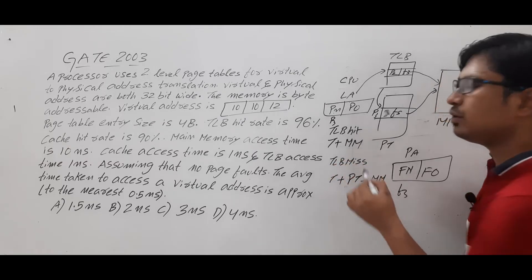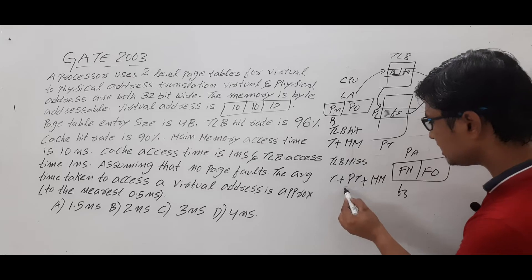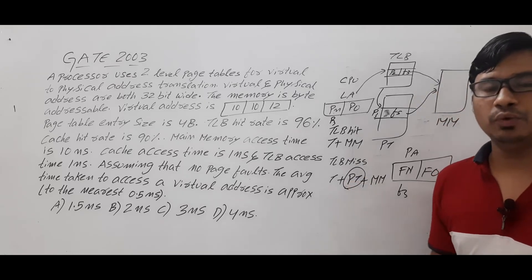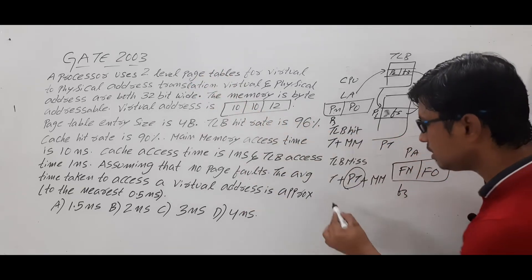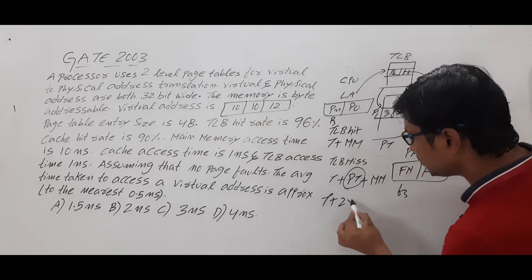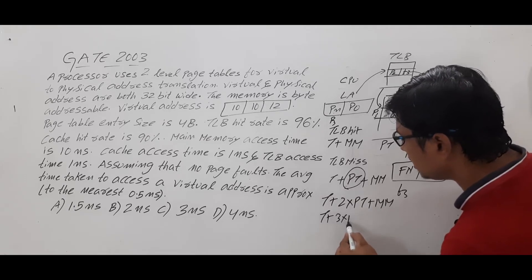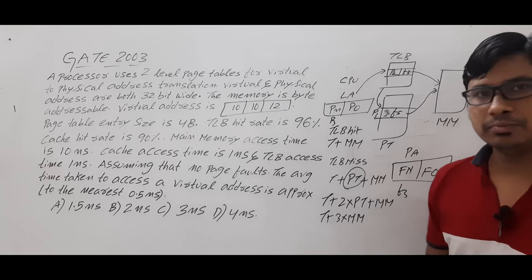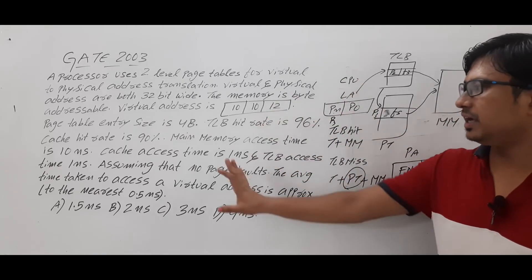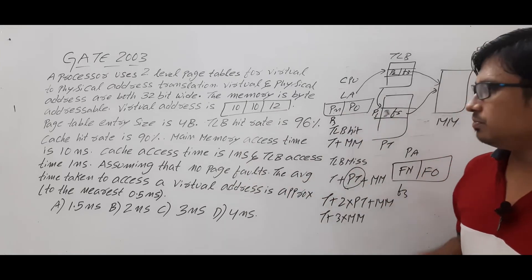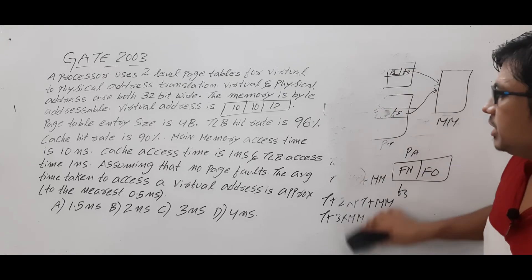On a TLB hit, you access the TLB and then main memory once. On a TLB miss with single-level paging you access the page table once plus main memory, but with two-level paging it is 2 page table accesses plus the main memory, which equals TLB access + 3 main memory accesses total. This is the time breakdown for determining whether a page is available in main memory.